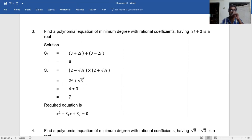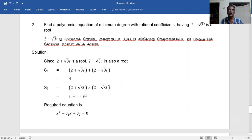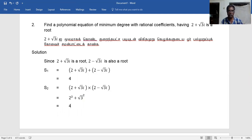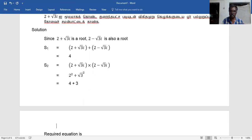Again, 2² + (√3)² = 4 + 3 = 7. So we have S1 = 4 and S2 = 7.